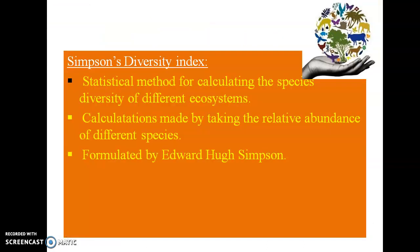What is meant by Simpson diversity index? This was first formulated by Edward Huck Simpson. This is a statistical method for calculating the species diversity of different ecosystems. Here, calculations are generally made by taking the relative abundance of different species.